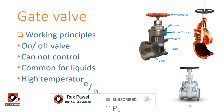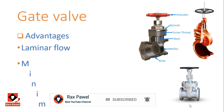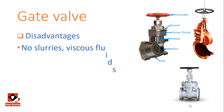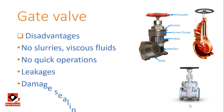Advantages of the gate valve: it provides laminar flow, giving minimum pressure loss when fully open, and tight sealing when fully closed. It can also be used in both directions. Disadvantages: the gate valve cannot deal with slurries or viscous fluids and cannot operate quickly. Leakages may occur due to load, and sealing surfaces can get damaged due to friction.